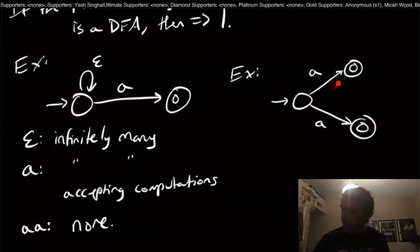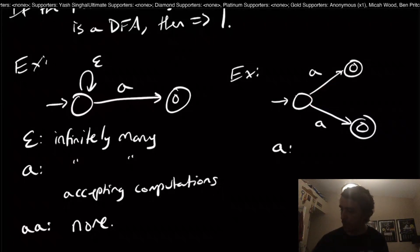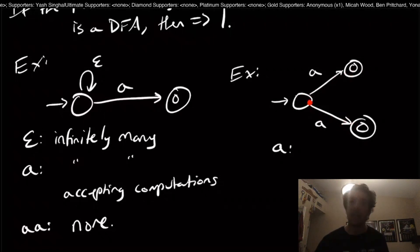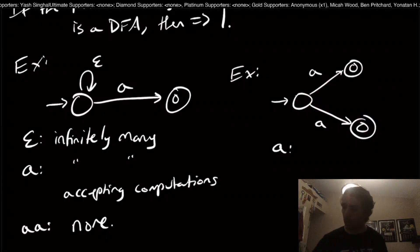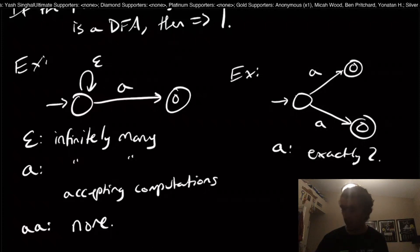Notice that we can, for the string A, we have to start in the start state. But we can take either one of these two routes. And we've read the entire thing in both cases. Therefore, there are actually exactly two in this case.